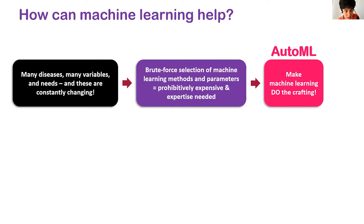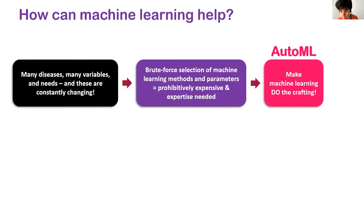How can machine learning help? We have many diseases — today we'll talk about cancer and breast cancer in particular. There are different types of patient variables and features, and one may want to develop risk prediction models for a variety of needs. Both patient characteristics and clinical needs may change over time. A brute-force approach is often ineffective. This is where automated machine learning tools come in — to craft risk scores at scale. Ahmed will talk more about that.